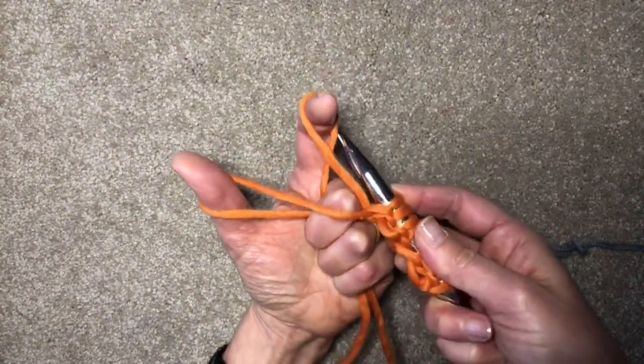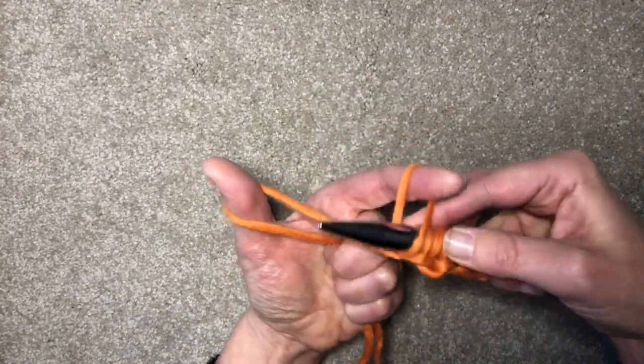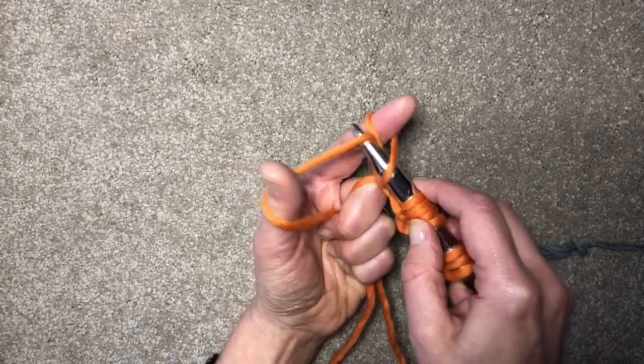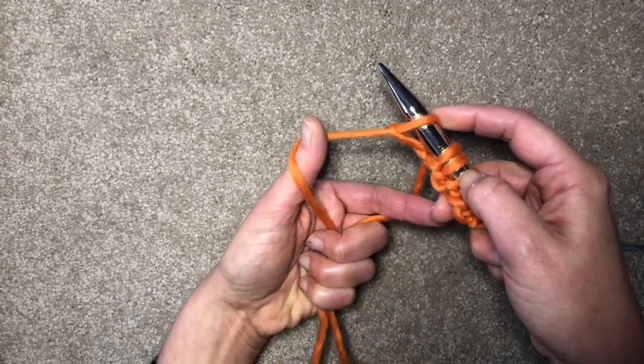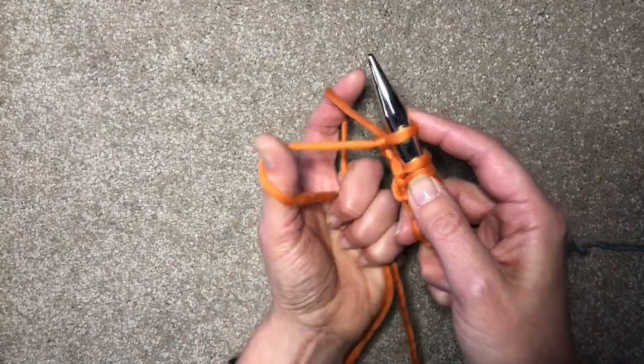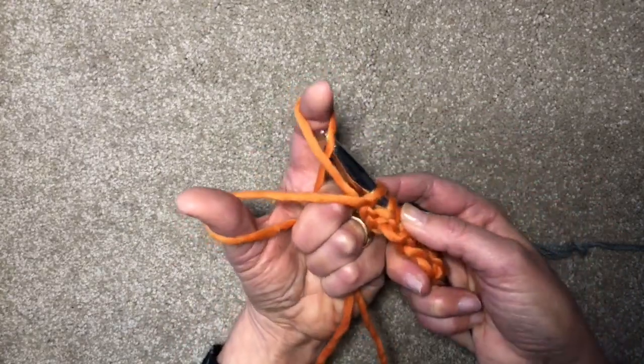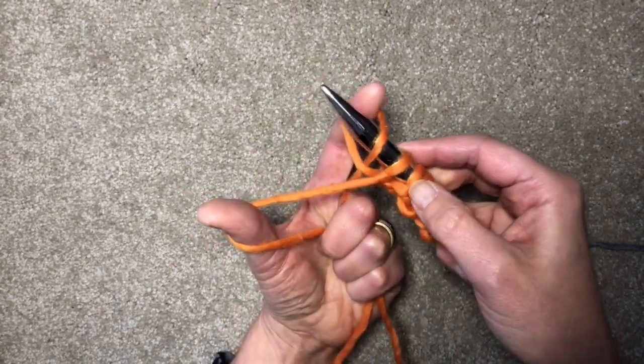If I do a couple more purlwise, it is actually possible if you find it easier, you can wrap the other way for your purl stitches. What that means is they're seated the wrong way on the needle, so you just correct that on the first row coming back, or the first round, because this of course works great in the round.